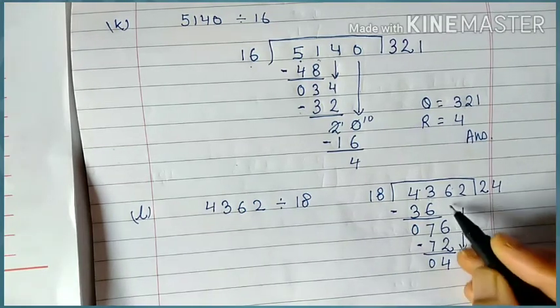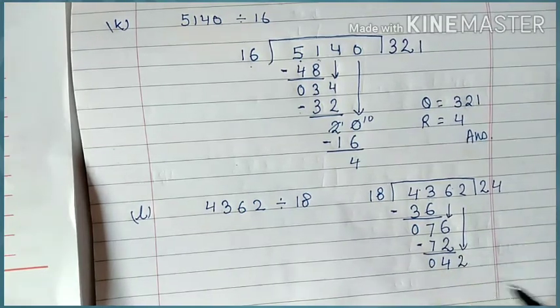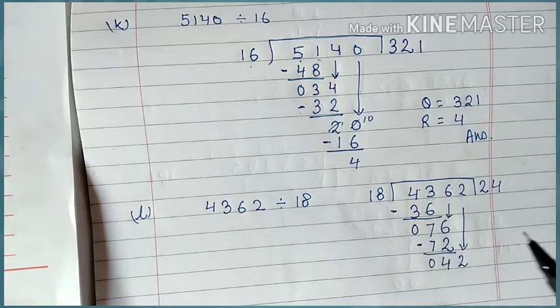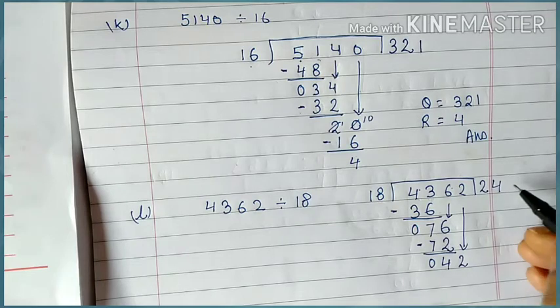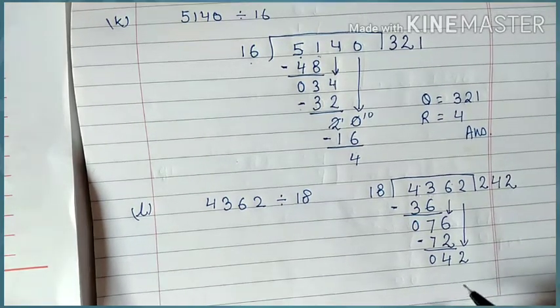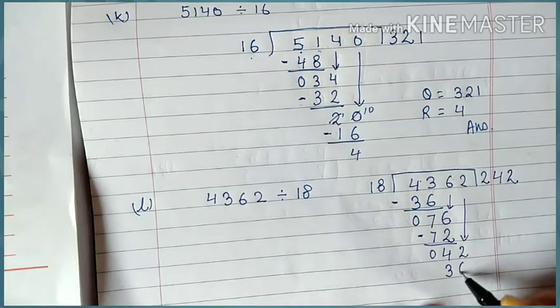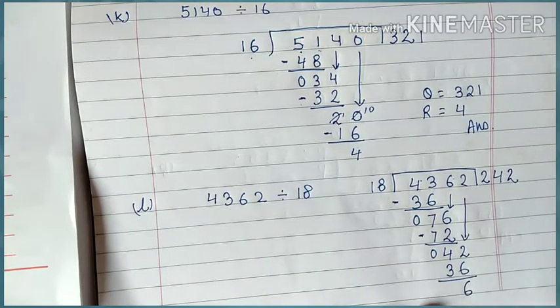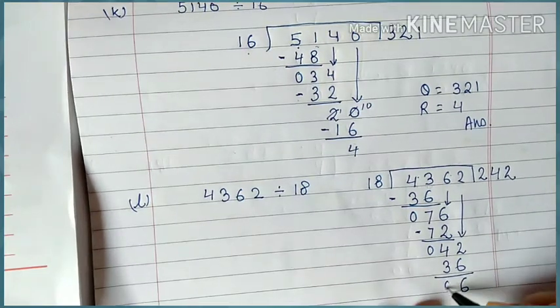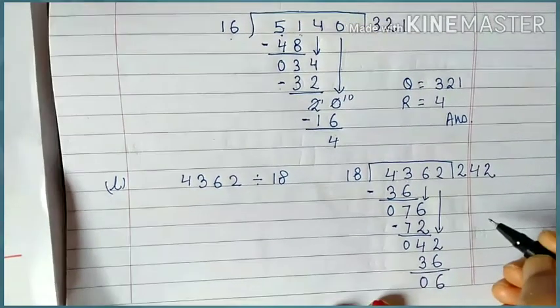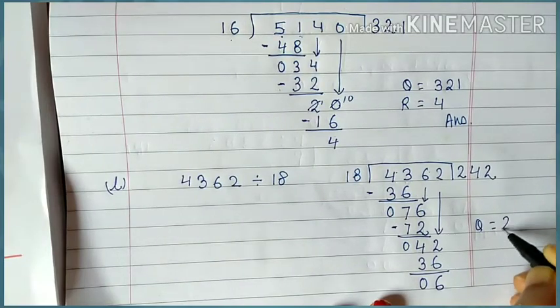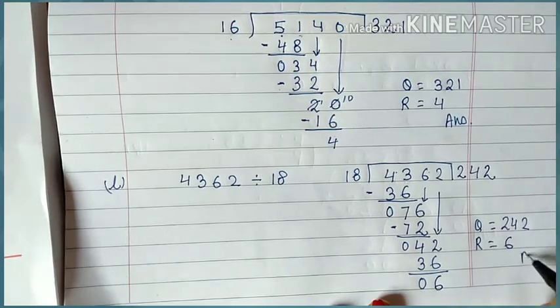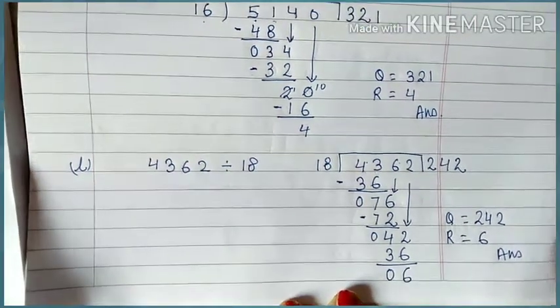Now how much will it take from here? This is 2. How many times will it go? 18 times 2 is 36. So again it will go 2 times. Write 36 here. This will be 12. 12 minus 6 is 6. So what will be the answer? Quotient equal to 242, remainder equal to 6. This is your answer. Understood children?